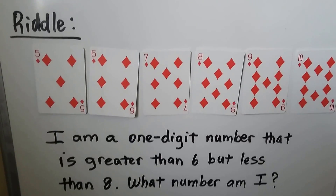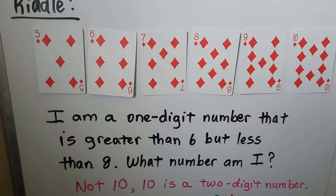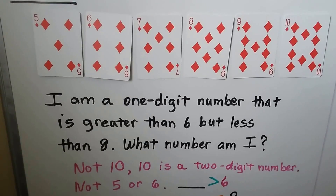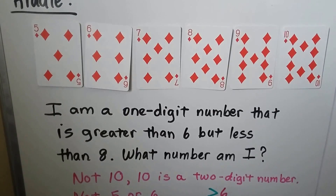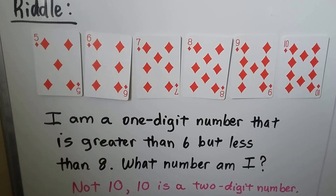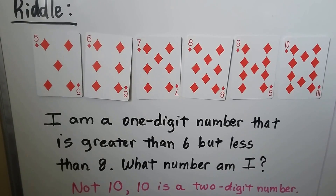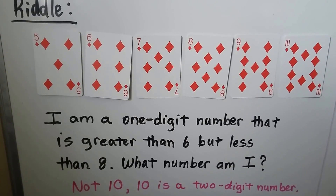Here we have a riddle, and we have these cards to help us. 'I am a one-digit number that is greater than 6 but less than 8. What number am I?'